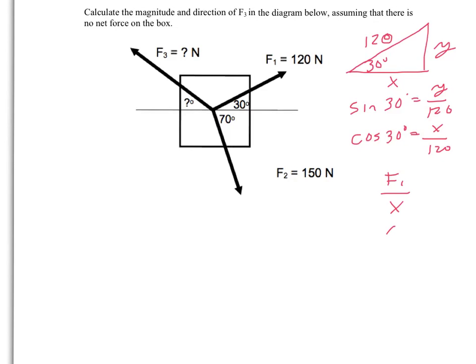So 120 times sine 30, that is 60 for y. And 120 times cosine 30, I get 103.9. And I just want to double check my signs. F1 is up and to the right, so both of these should be positive. So that's fine.